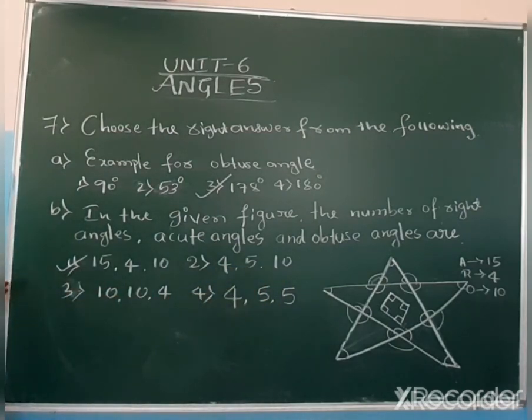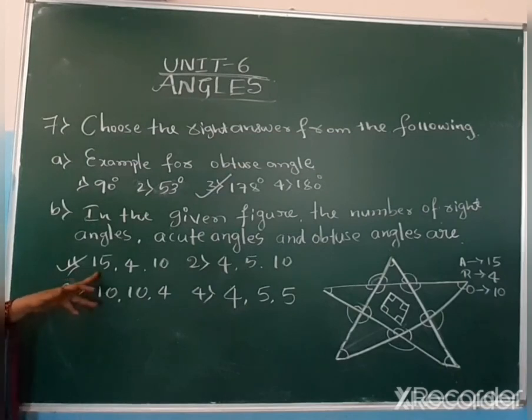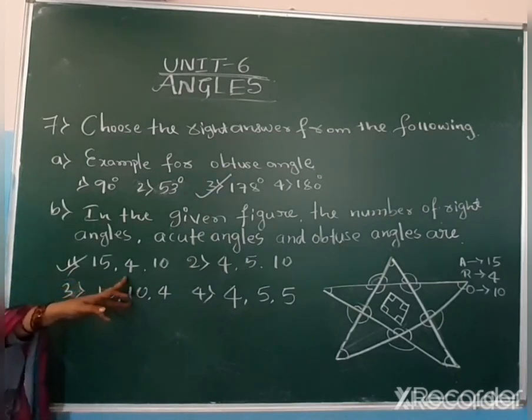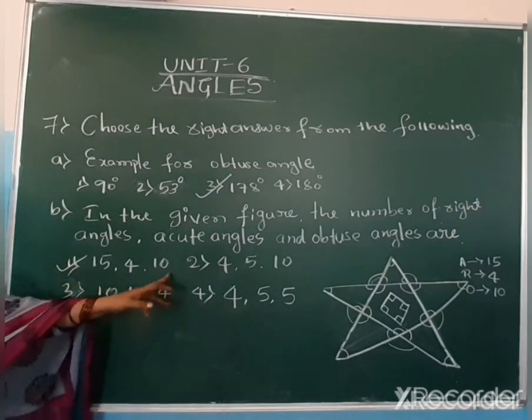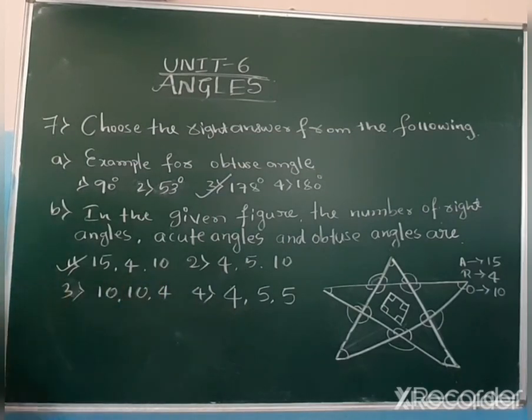So the answer is: 15 acute angles, 4 right angles, and 10 obtuse angles. That is the correct option.